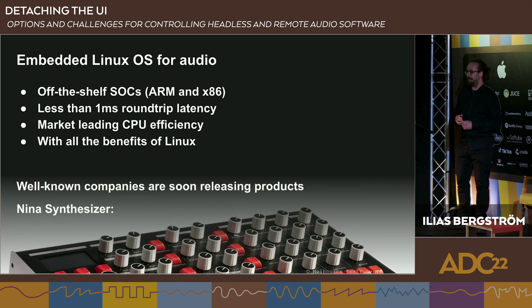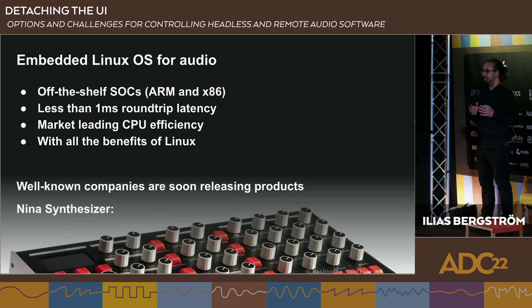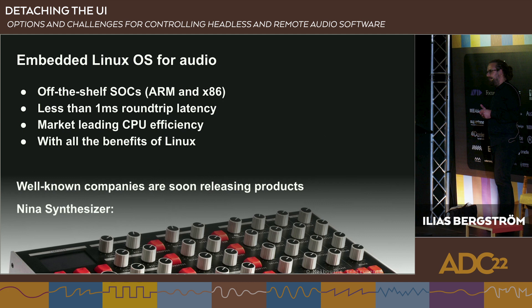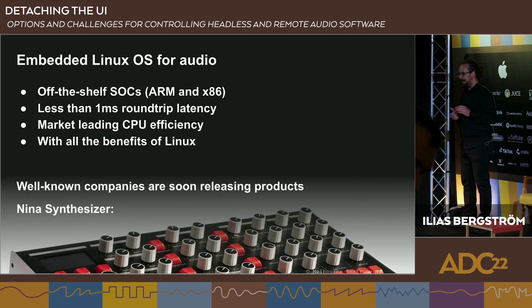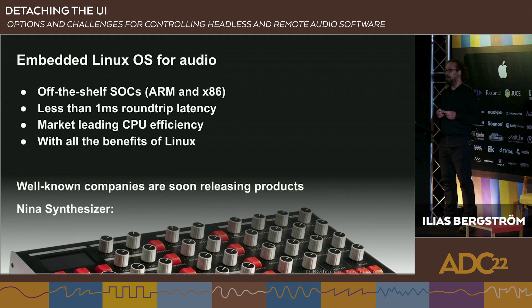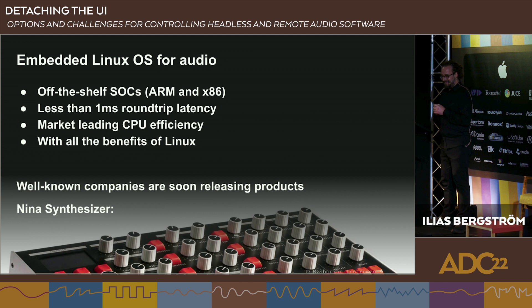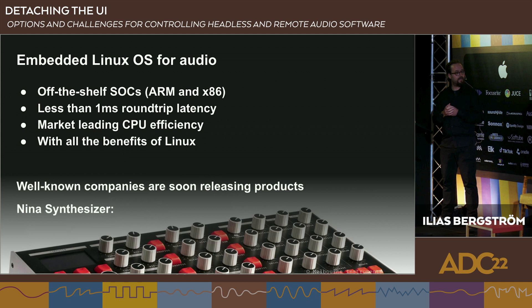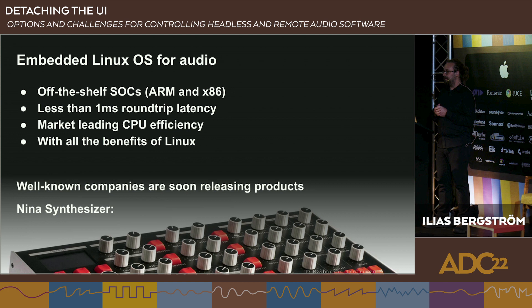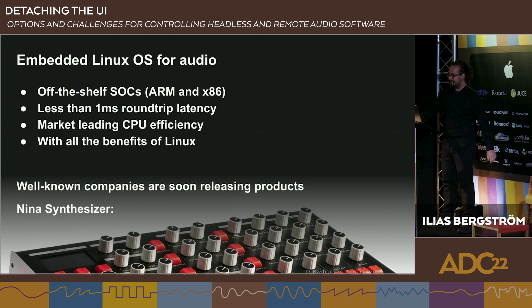For those who don't know us, what does Elk Audio do? Mainly we've created an embedded Linux operating system specifically for audio, which runs on off-the-shelf systems and chips, supporting ARM and Intel x86 architecture. The main advantage of Elk is you can achieve one millisecond of round-trip audio latency while maintaining market-leading CPU efficiency without sacrificing the benefits of working on a standard Linux OS.